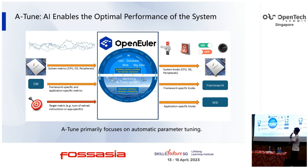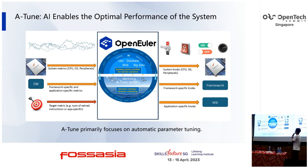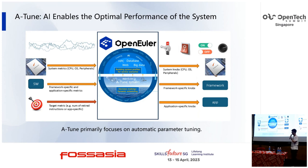All the metrics are sent to ATUN. ATUN can make intelligent decisions and output optimal knobs, such as system knobs, framework-specific knobs, and application-specific knobs. These optimized knobs can make the performance of the system better.